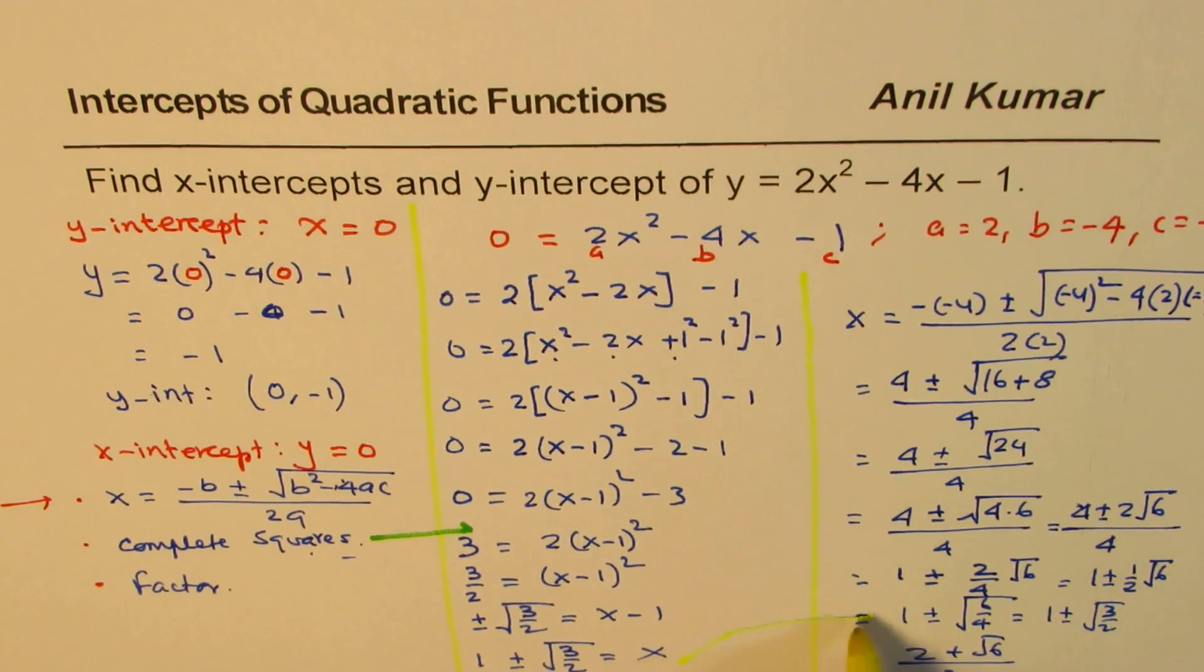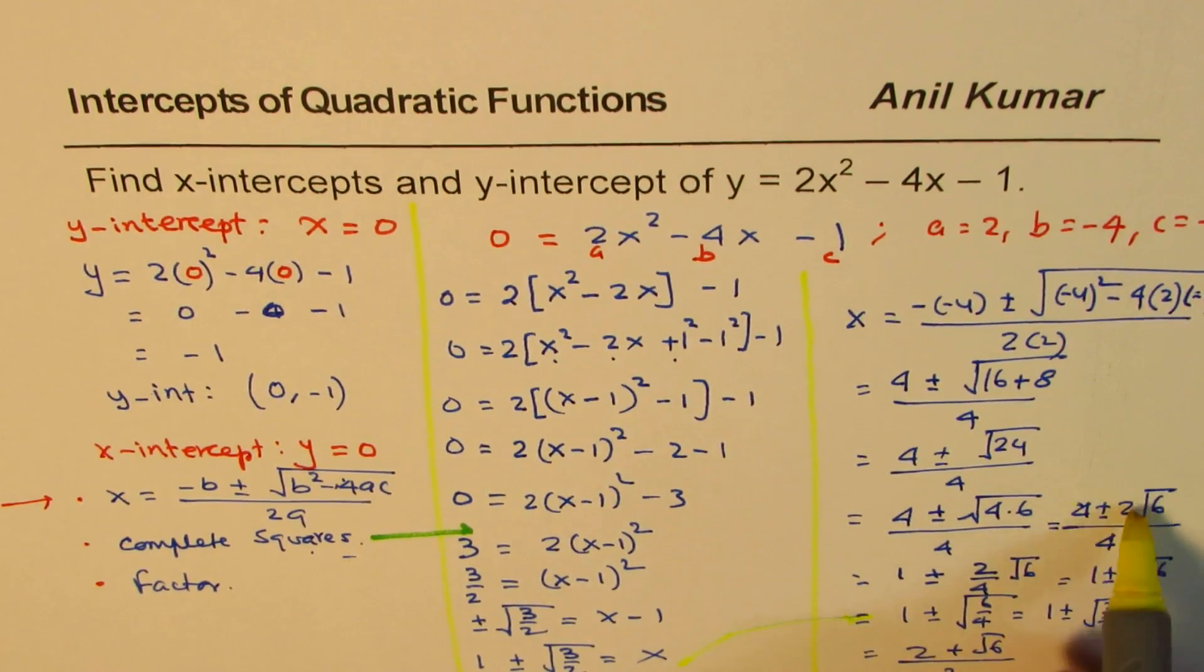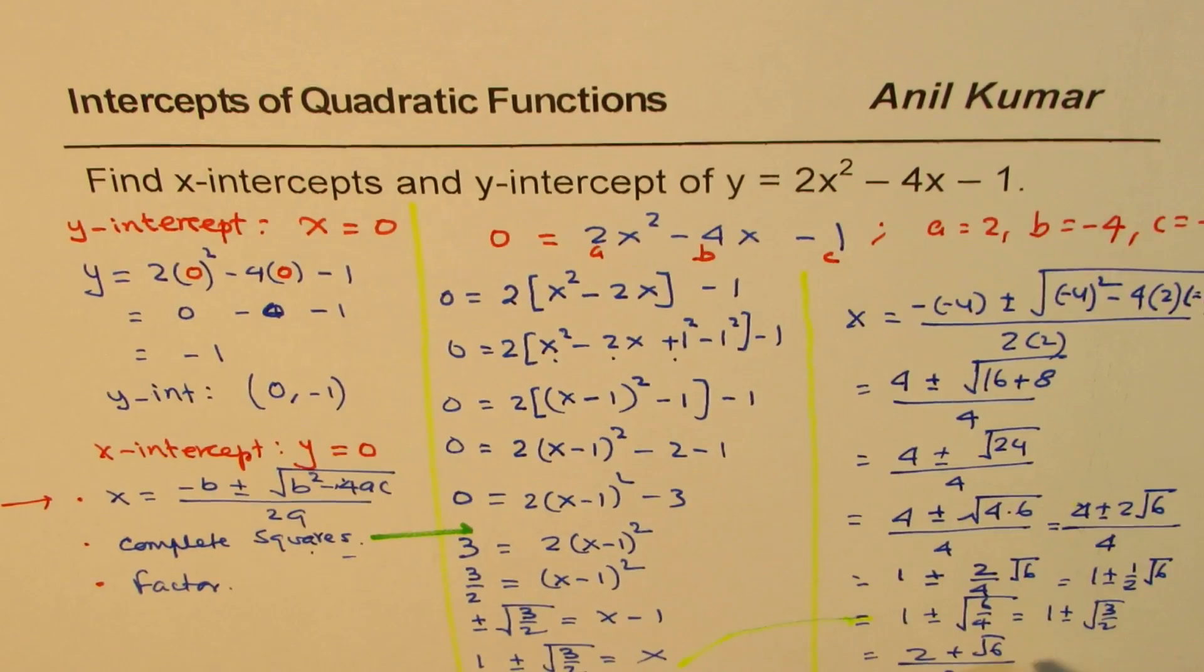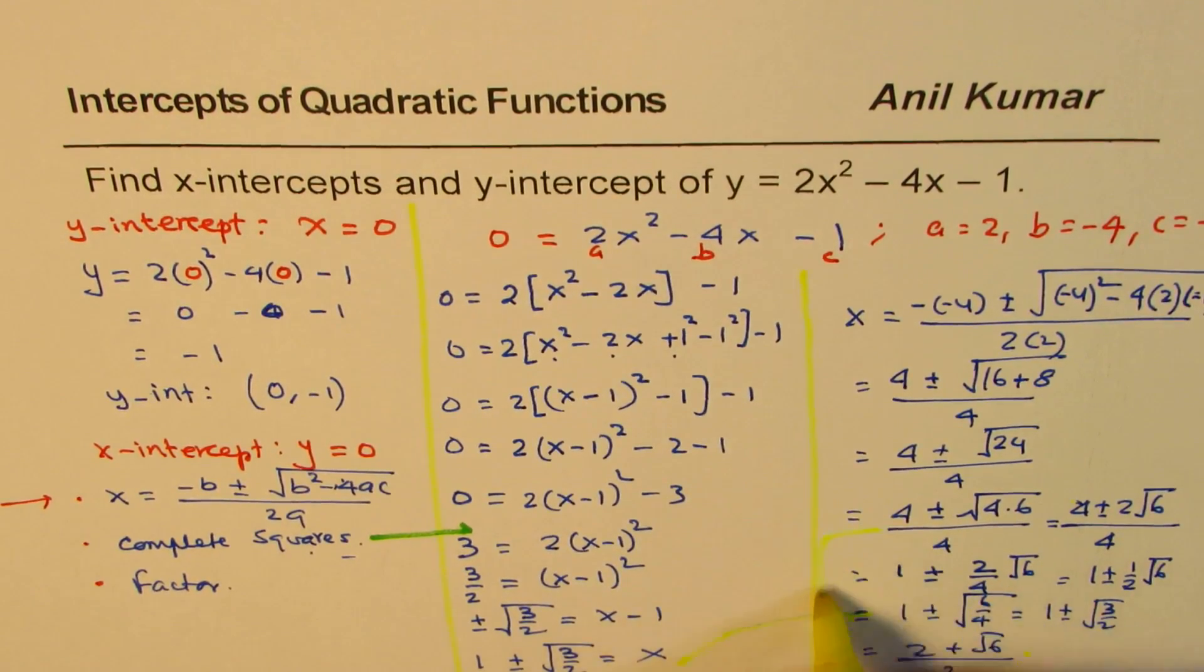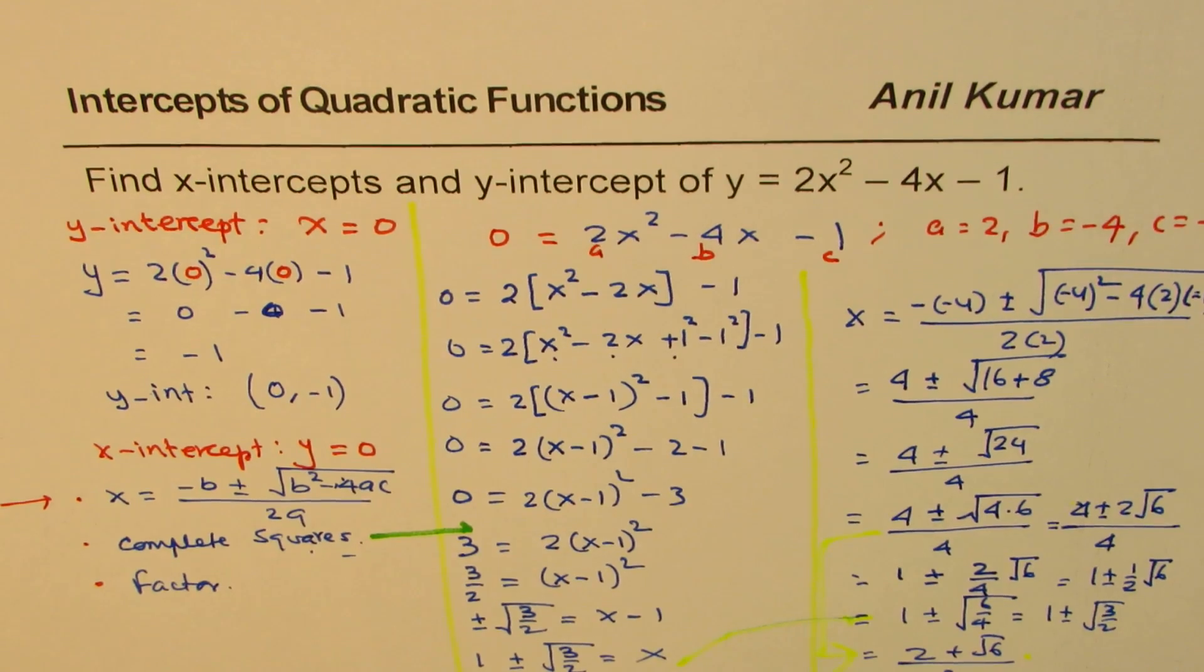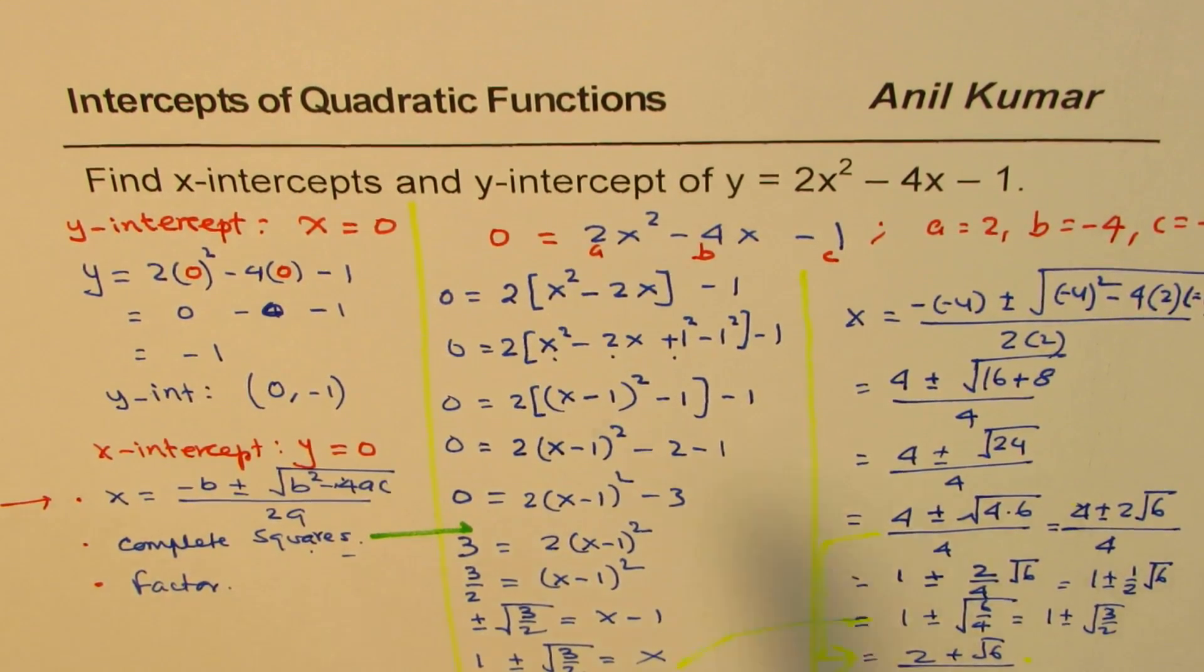So it could be this. And here, just multiply, divide by 2 to get this answer. So you could also do from here to this place. Anyway, so what do you get to know here that to find x intercept for a quadratic function, you could use either of these methods. And, you know, it takes time sometimes to solve such questions, but that is how it can be done.